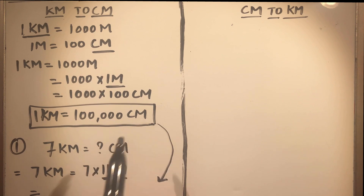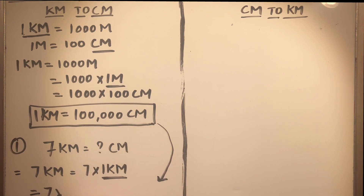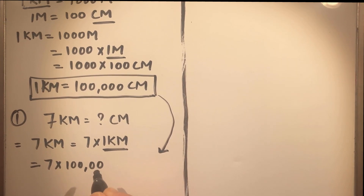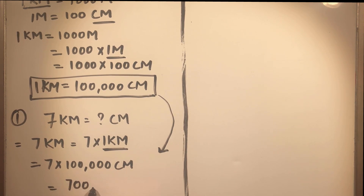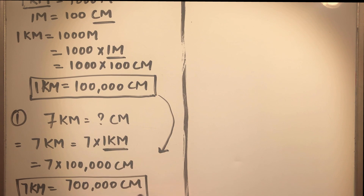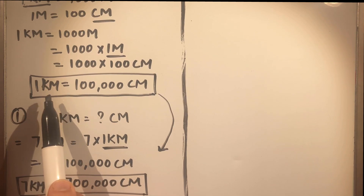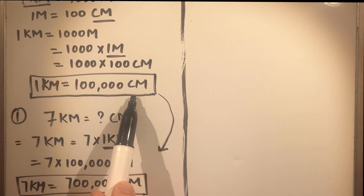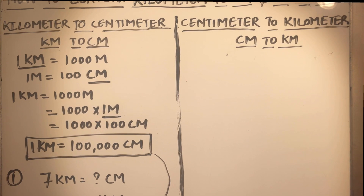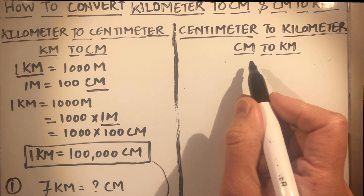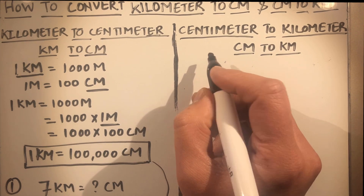In place of one kilometer we write one hundred thousand centimeters. So seven times one hundred thousand centimeters equals seven hundred thousand centimeters. This is how we convert from kilometers to centimeters — we simply multiply the kilometer quantity by one hundred thousand.